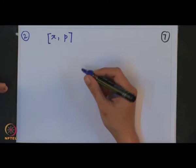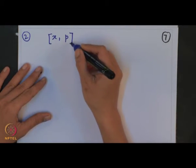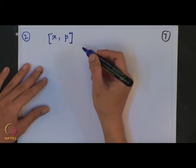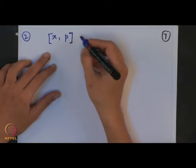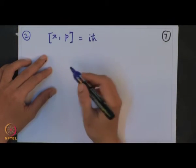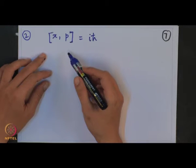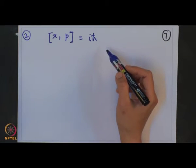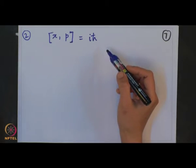They are commutators. Famous commutators like [x̂, p̂], and you can also check whether a Hamiltonian operator commutes with the momentum operator or the position operator.